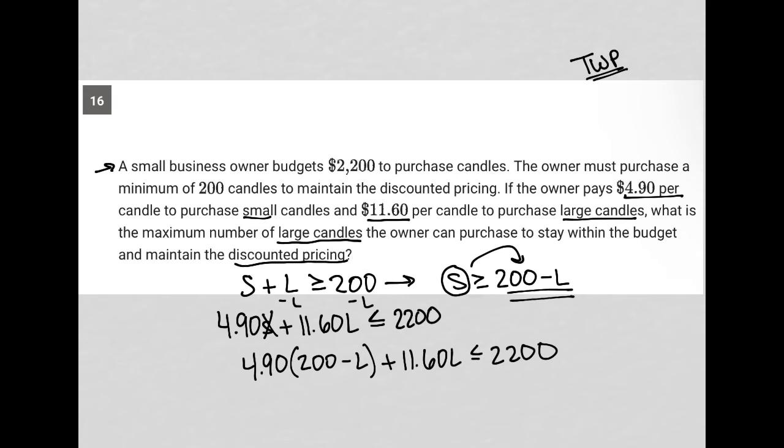So what is 4.90 times 200? That's 980. So I have 980 minus 4.90 L plus 11.60 L is less than or equal to 2200. I have like terms here. So I'm going to just write 11.6 minus 4.9 is 6.7.